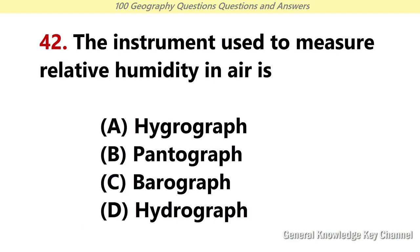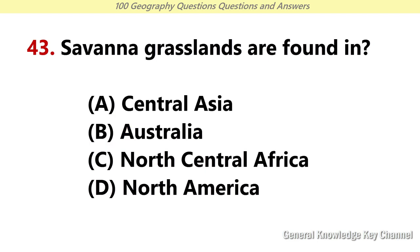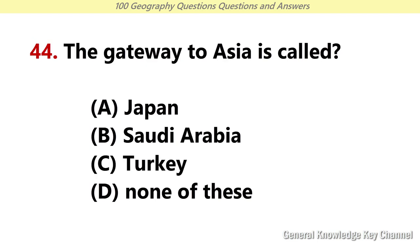The instrument used to measure relative humidity in air is? Answer A: Hygrograph. Savanna grasslands are found in? Answer C: North Central Africa. The gateway of Asia is called? Answer C: Turkey.